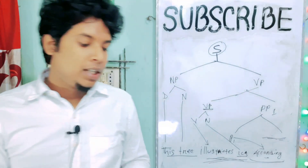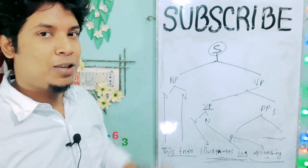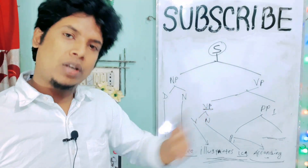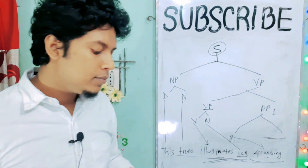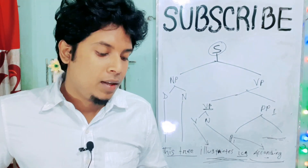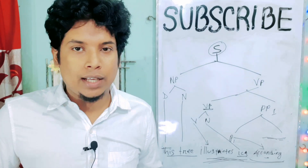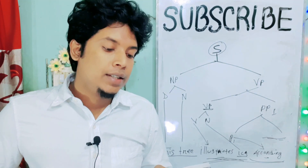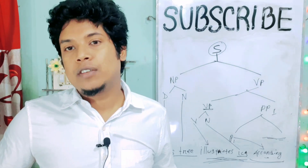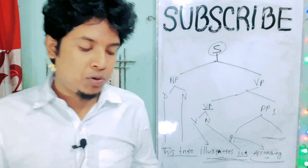This is our Immediate Constituent Analysis. This is how we write the tree diagram and write the structure. How do we write IC analysis? The Immediate Constituent Analysis is called IC analysis. A sentence can be divided into different parts of speech or different constituents.